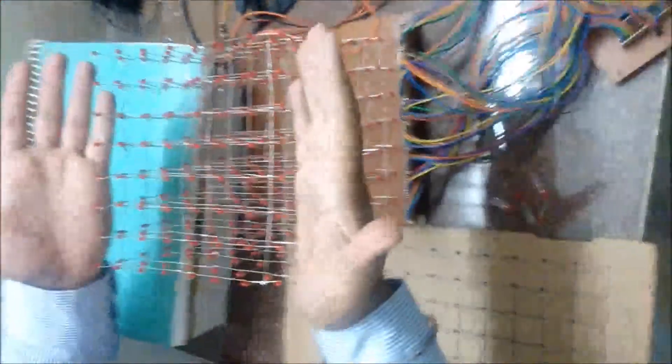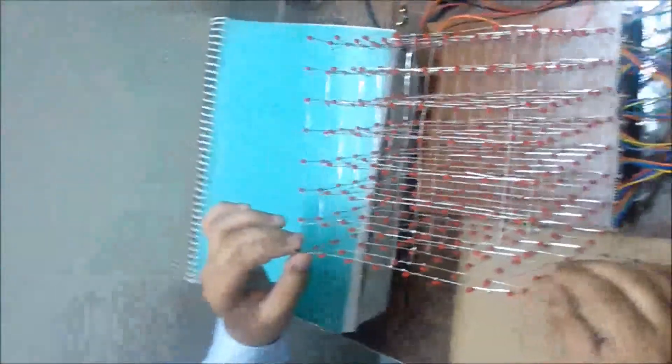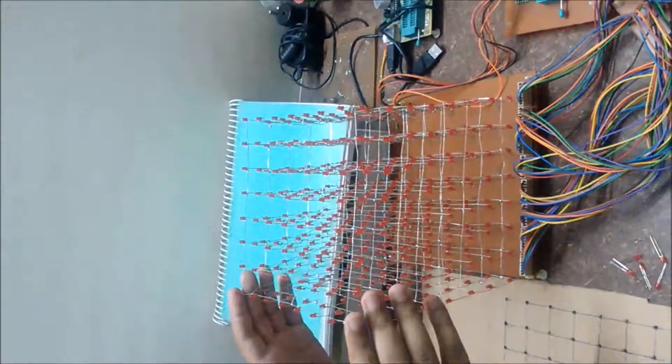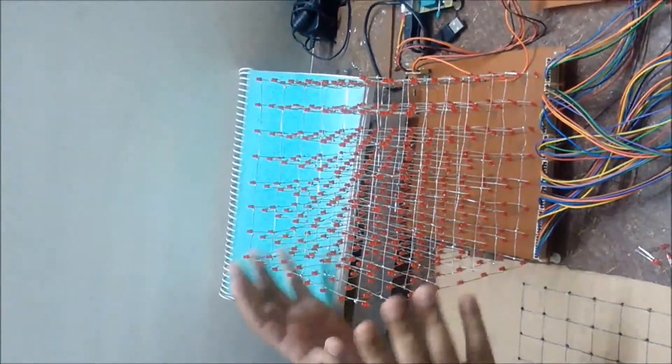This is one panel of the LED cube. In total, we have 8 panels with 64 LEDs in each panel, so there are 512 LEDs in the whole LED cube.